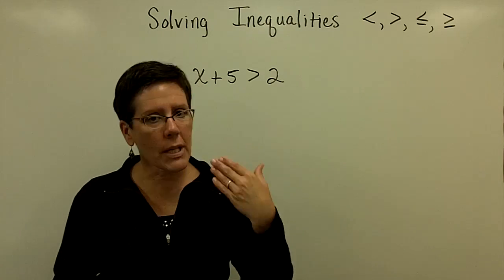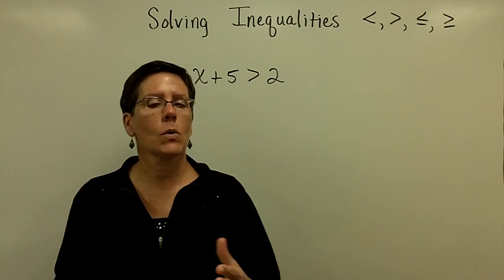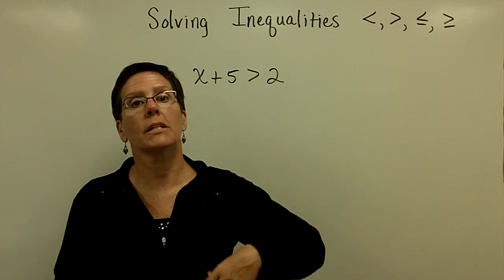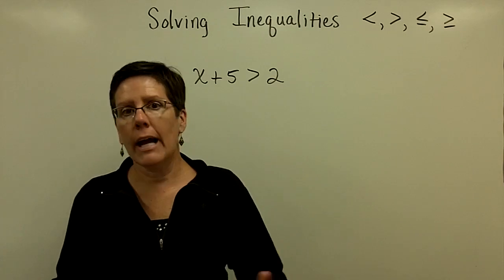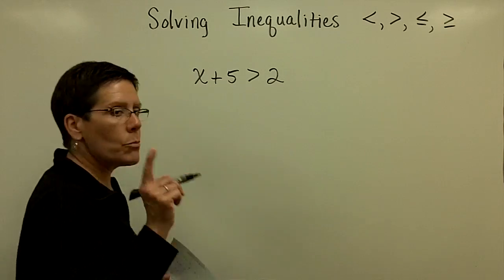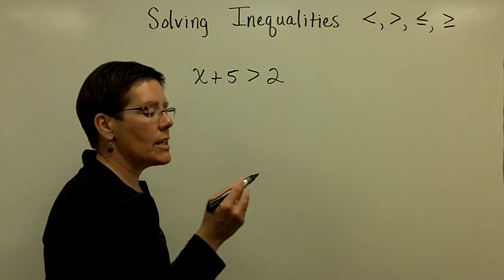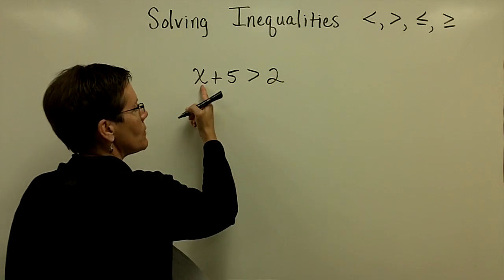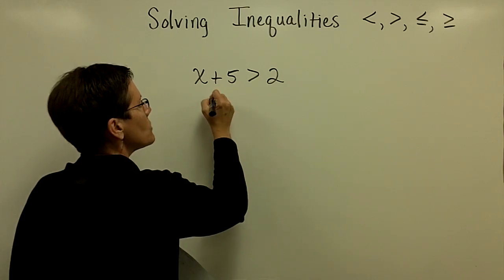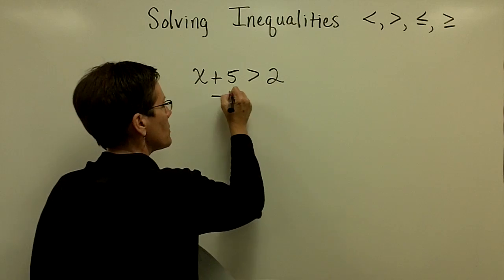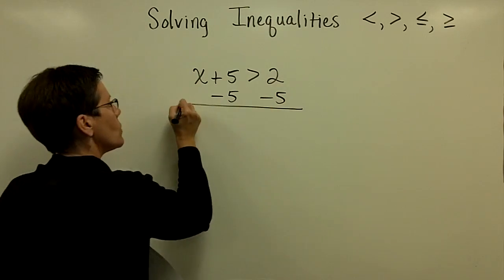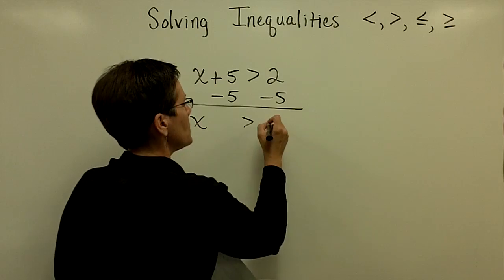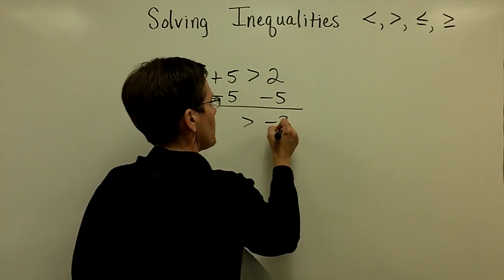You can add things to both sides of an inequality, you can subtract things from both sides of an inequality, divide, multiply. We'll get to that glitch in a minute. I want to solve by isolating the variable x by getting rid of this plus 5. So I'm going to subtract 5 from both sides of this inequality, and 2 minus 5 is negative 3.